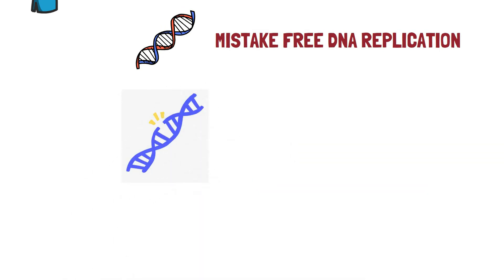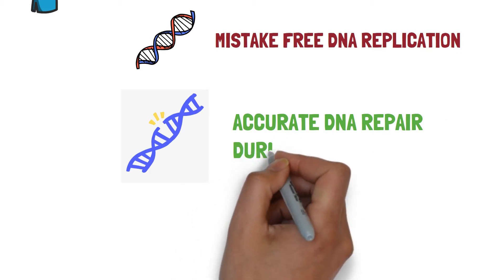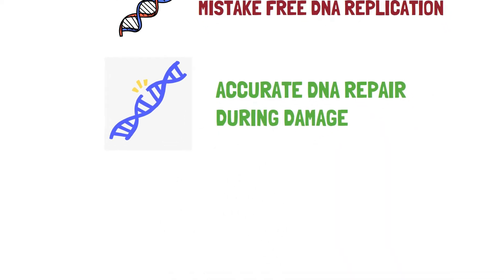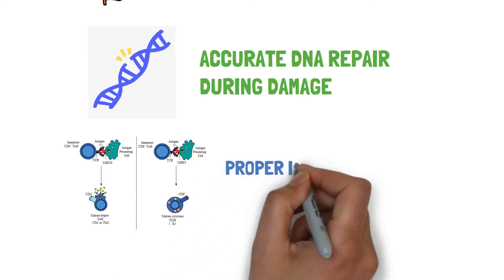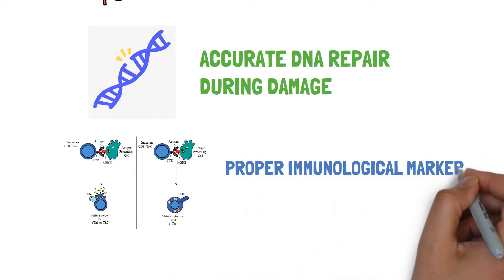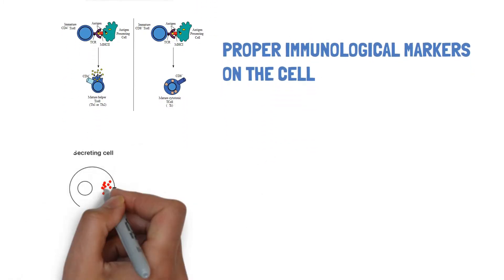Third is the accurate DNA repair during damage which is essential for proper upkeep of the cell. The next is proper immunological markers on the cell that updates the immune system to differentiate between self and non-self.